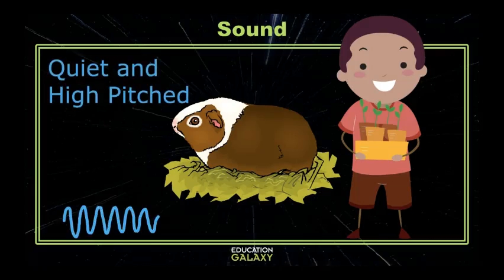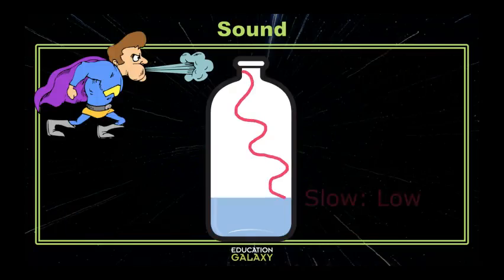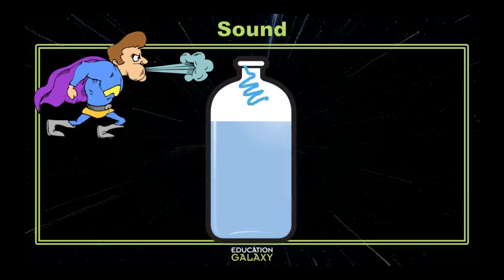The amount of space the vibration has to travel can also affect the speed and pitch of the sound. Let's say you're blowing across the top of a large jug of water. If the jug only has a small amount of water, the vibrations have a lot more space and move much more slowly, so we have a low pitch. But if you add water to the jug, the vibrations have less space and move much faster, creating a higher-pitch sound.